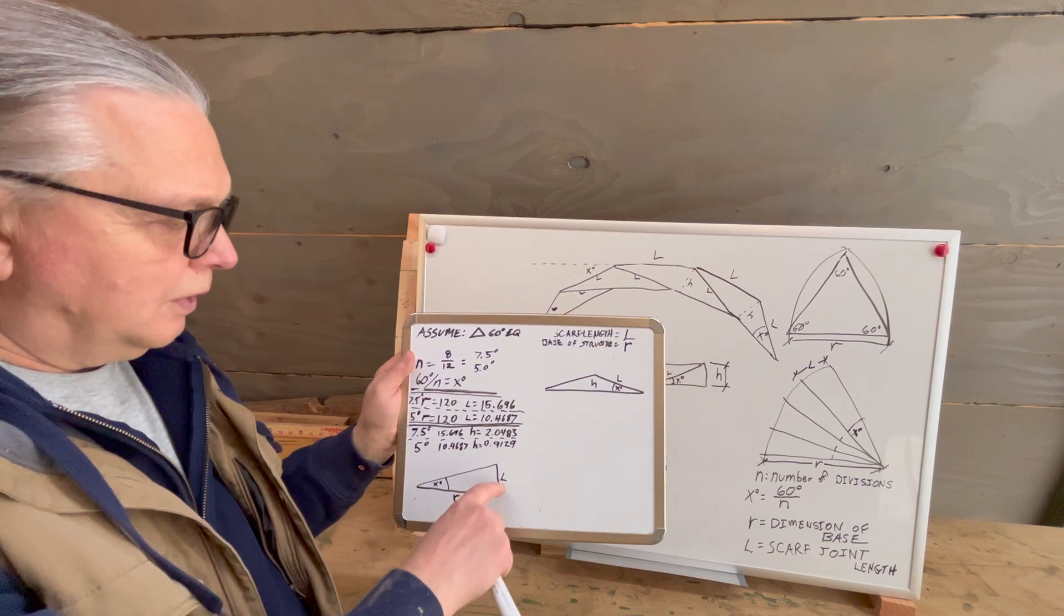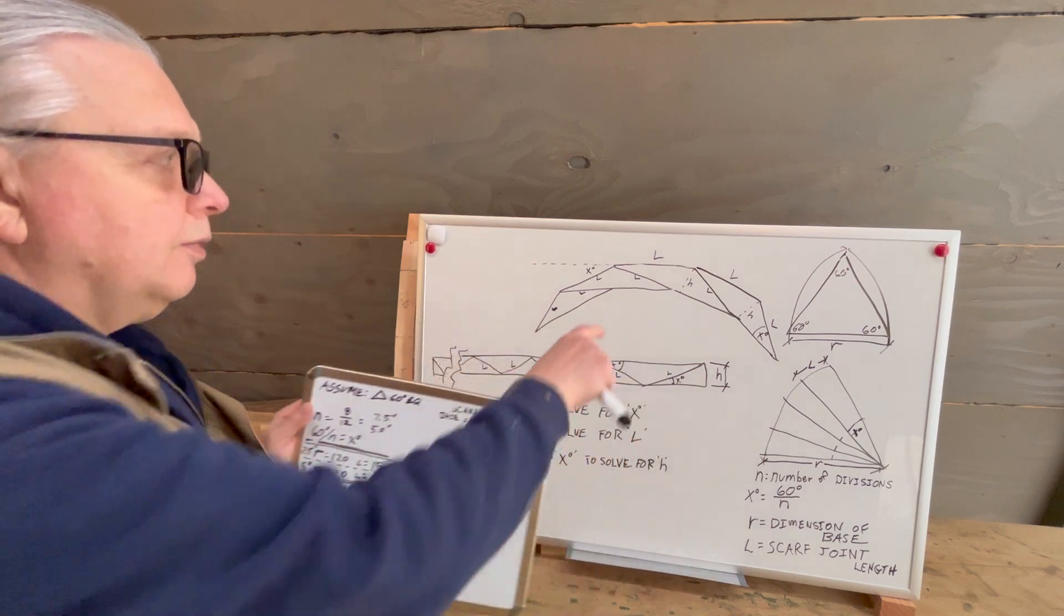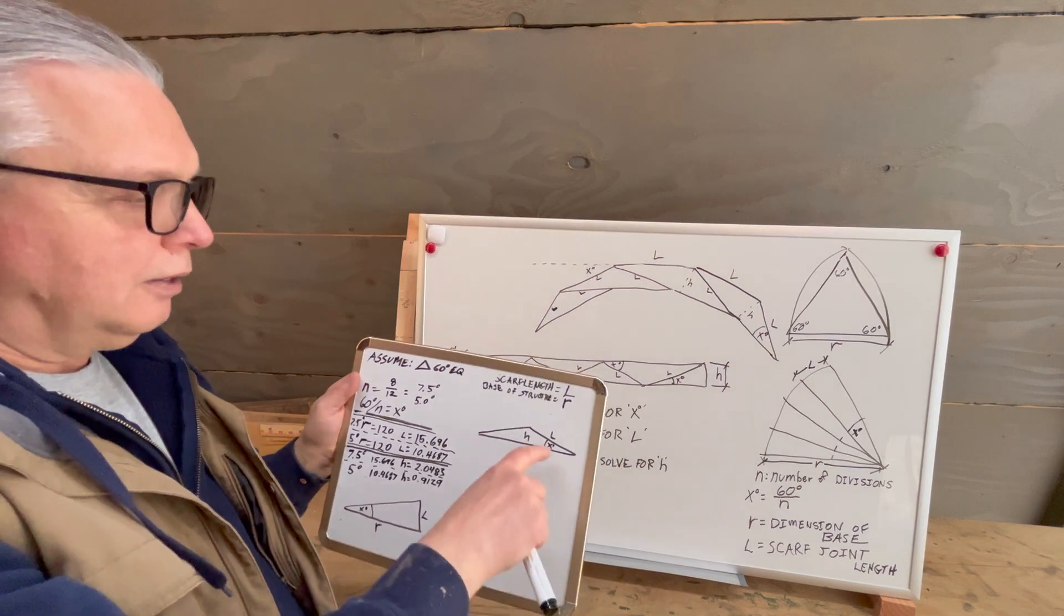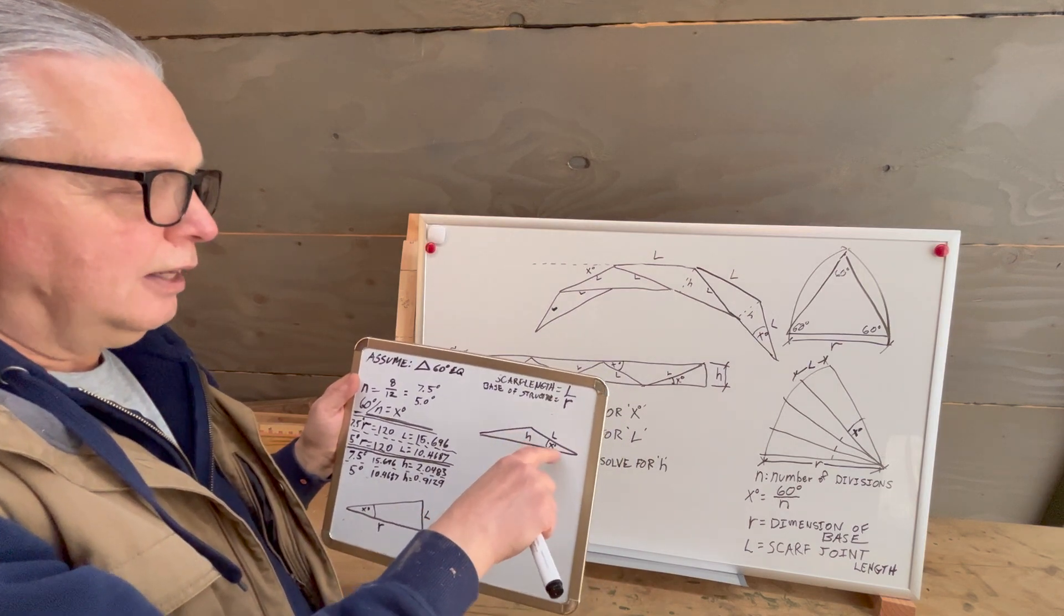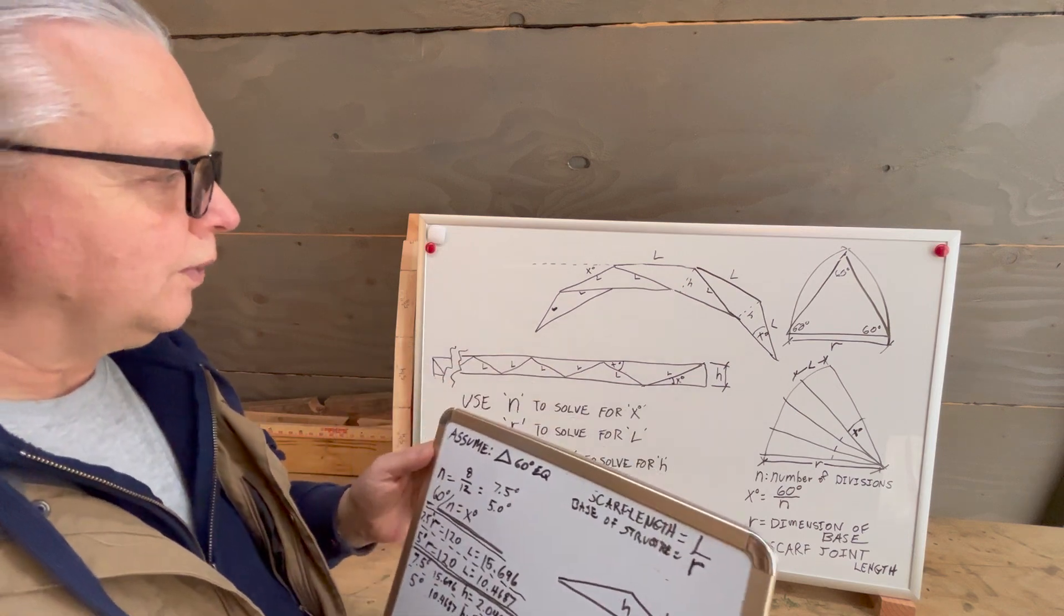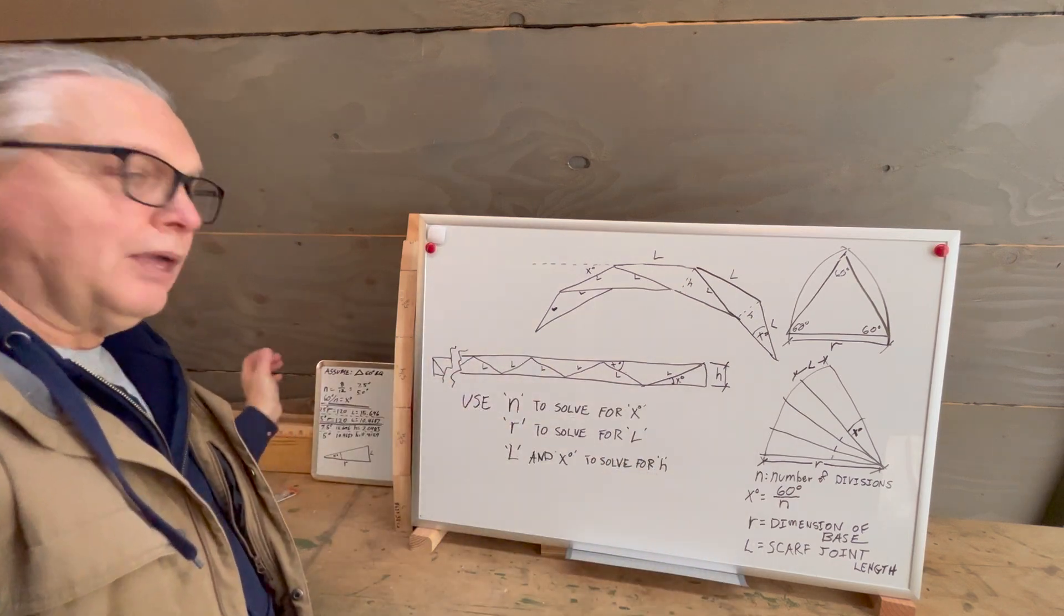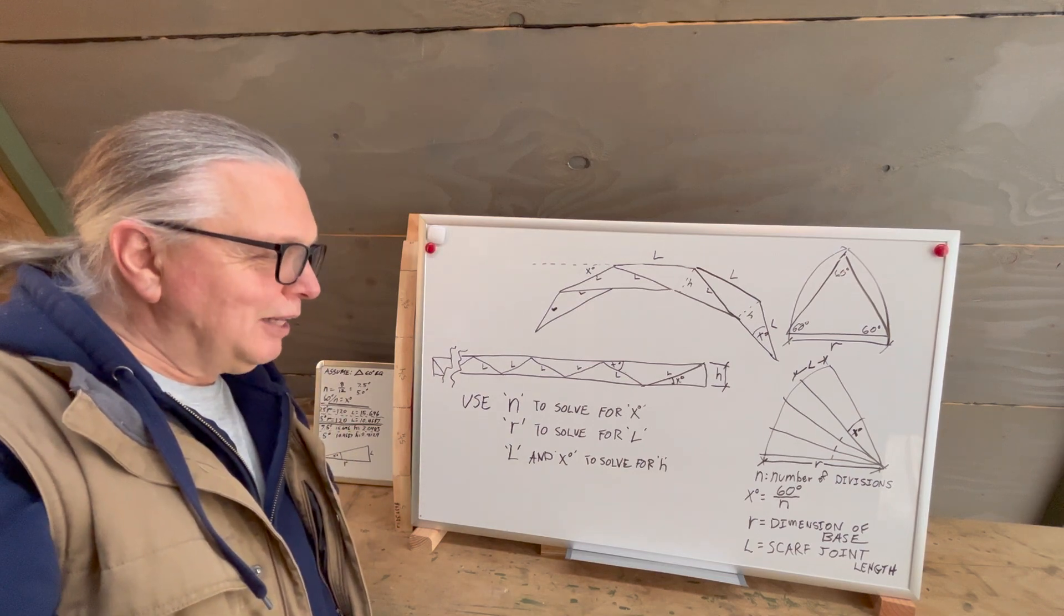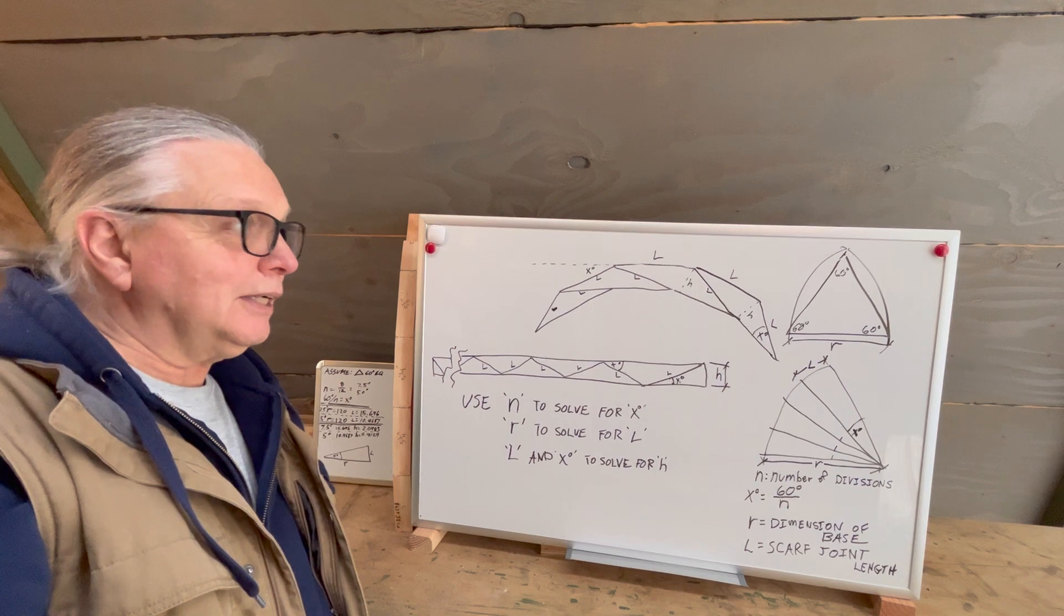The angle length of your scarf joint is going to be directly related to the height and the angle of the triangle. So it's very direct. Hopefully I haven't muddled that up too much in trying to express it to you. But because I'm not a mathematician, it's really hard for me to express it out loud.